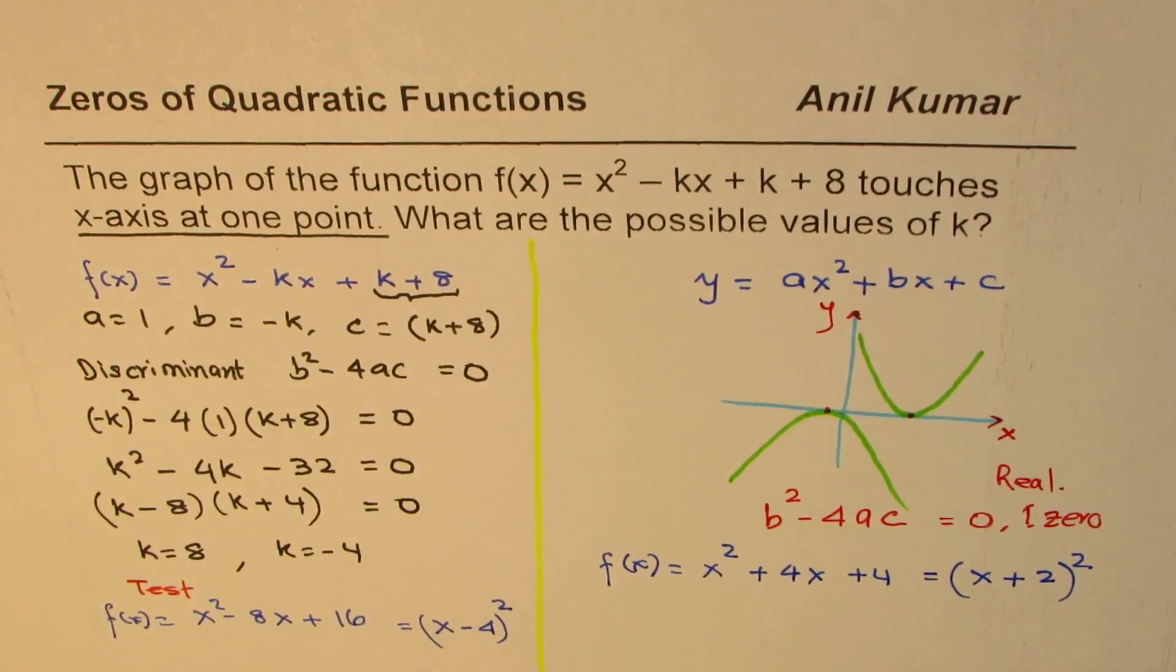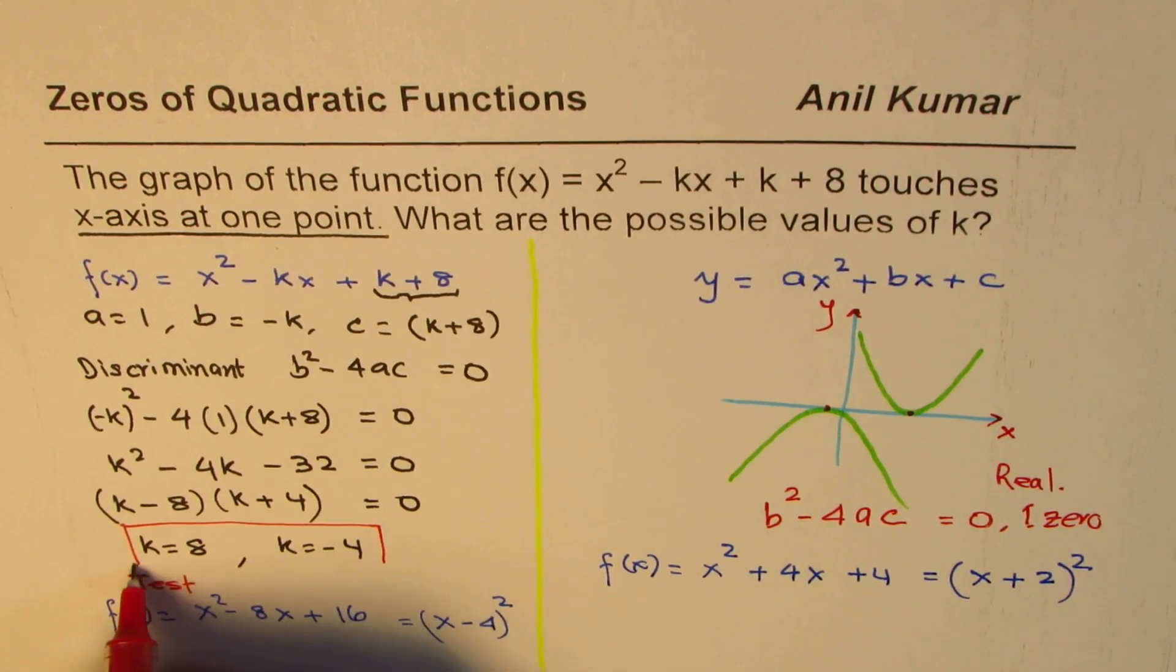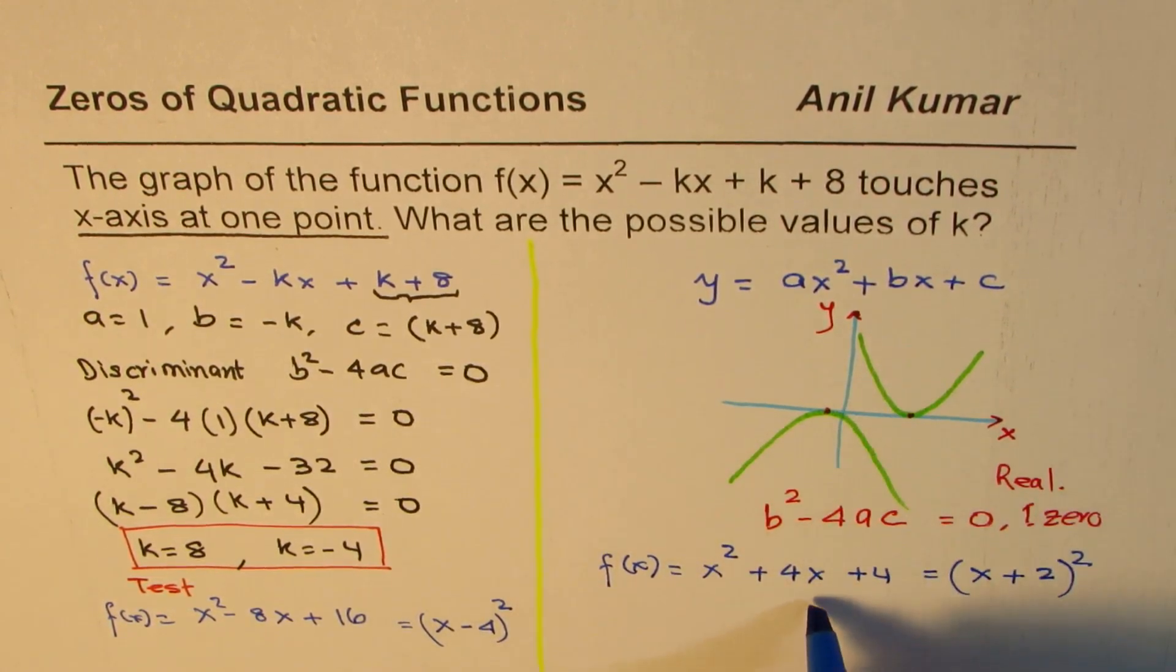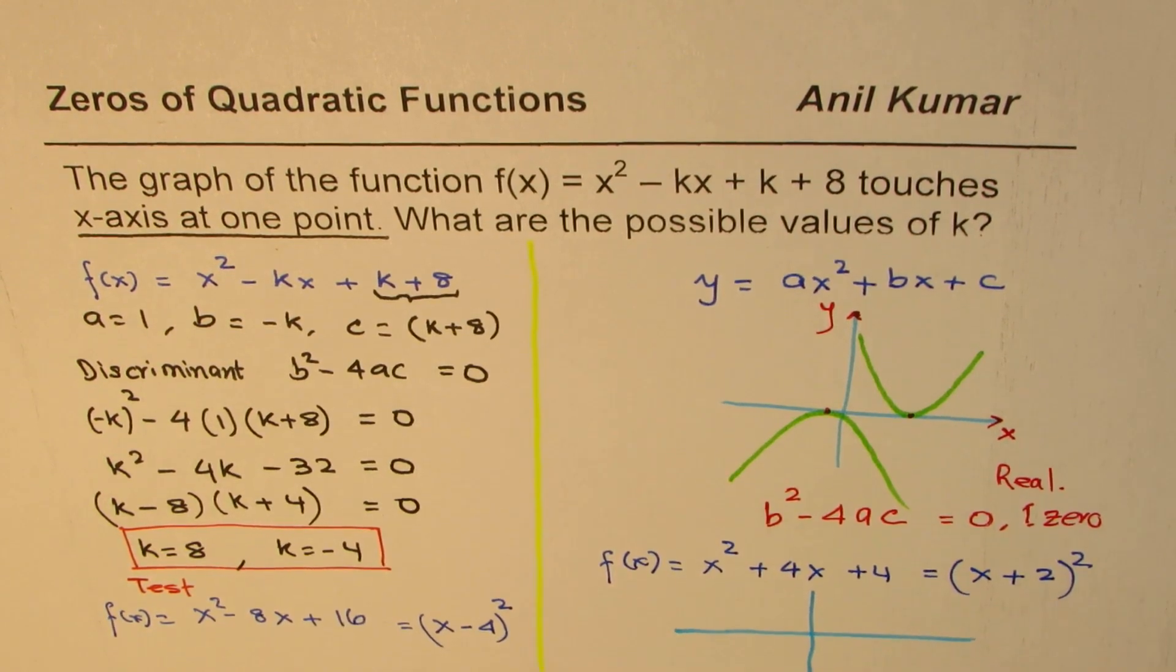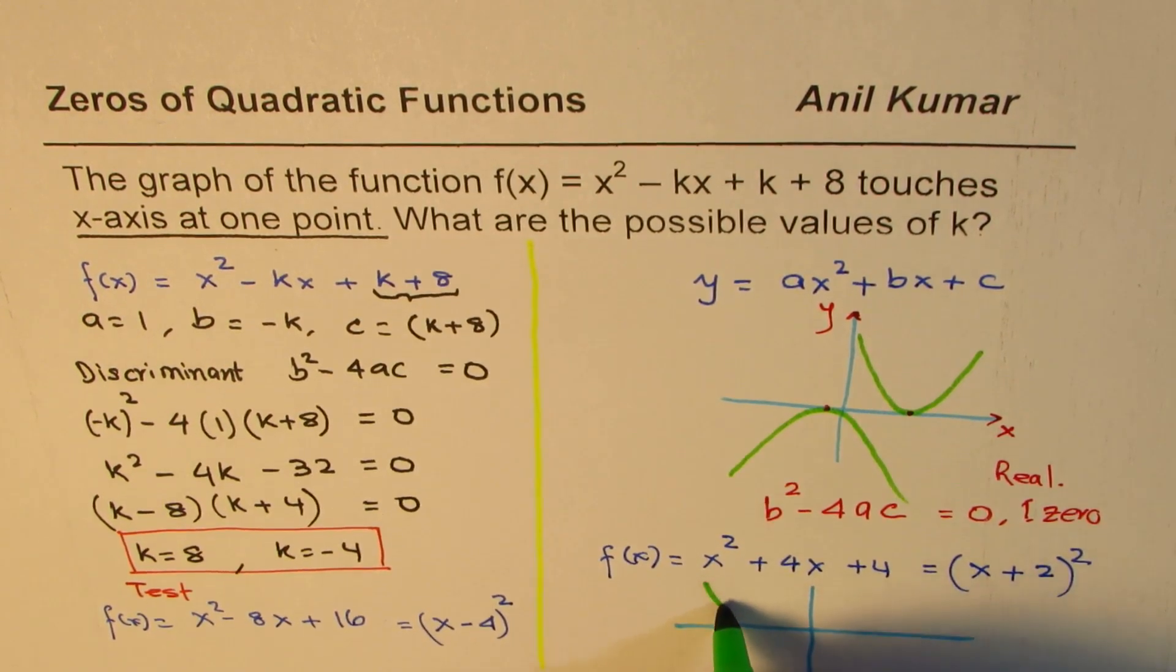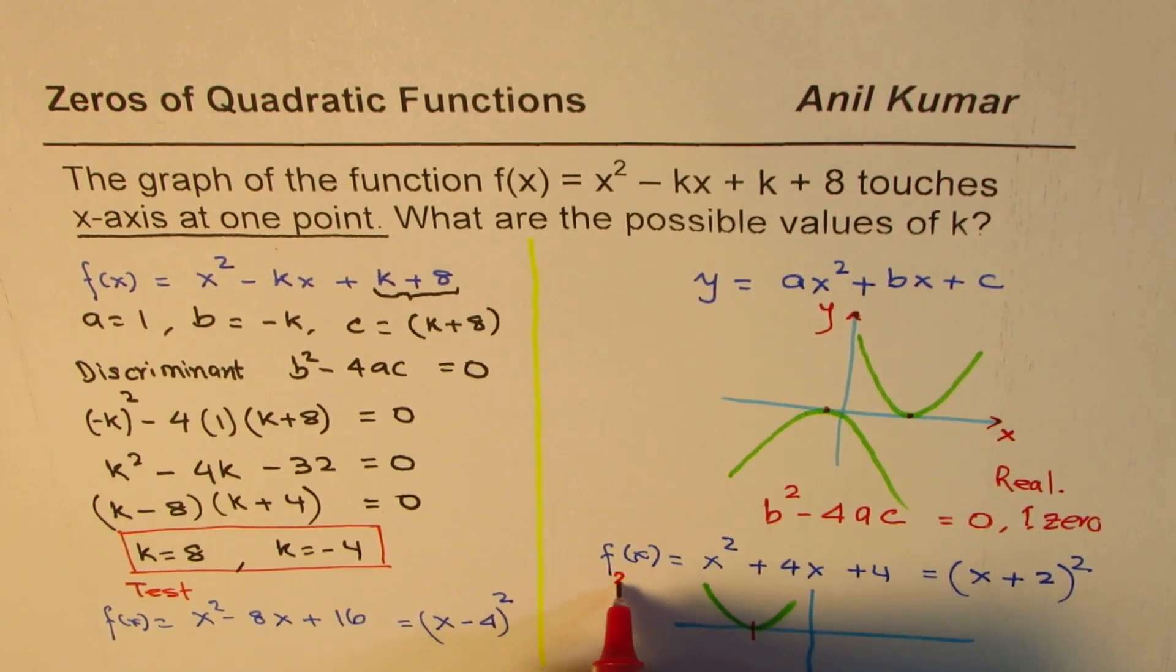So we have two answers, k equals to 8 and k equals to minus 4, and that results into these two equations. So actually you'll get kind of a graph. Let me now sketch it here. One of them is having zeros at minus 2 opening upwards like this. So this is 1. Let me call this as function 2. So this is my f of second function.